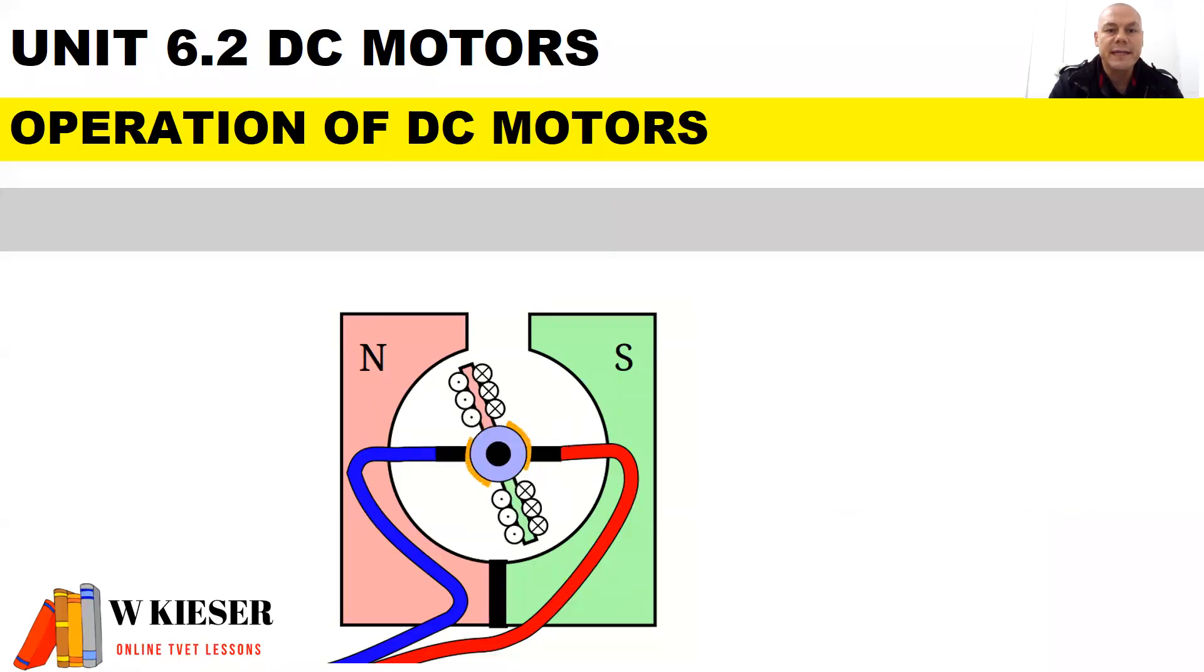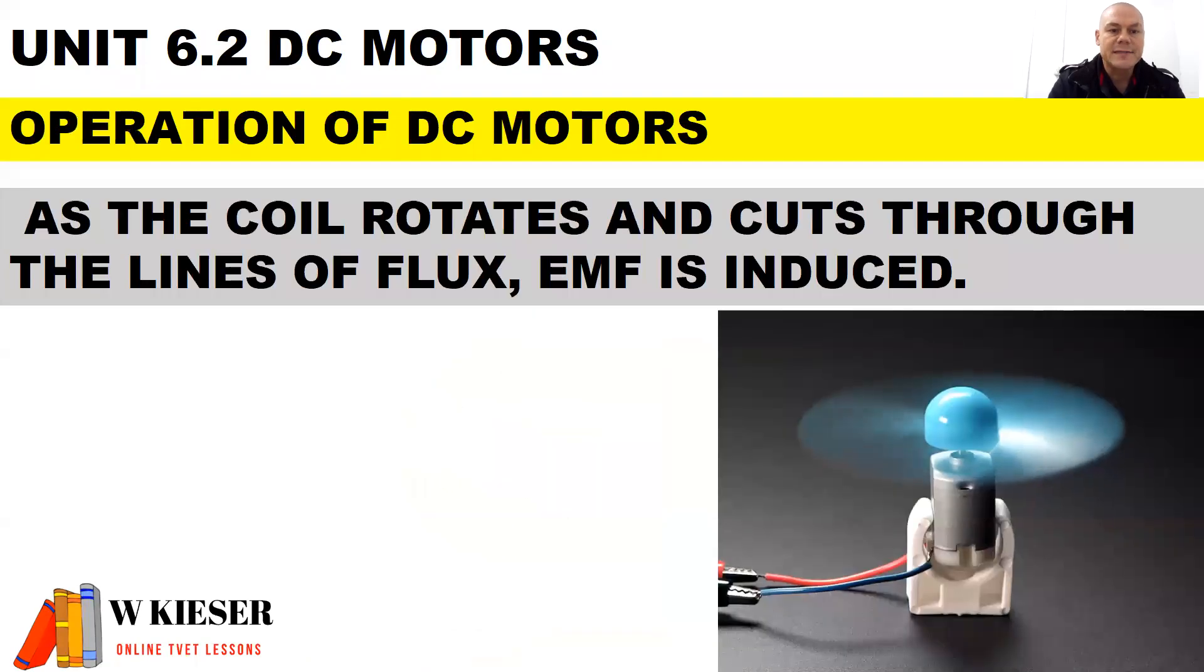In terms of the operation of DC motors, don't forget the construction for a DC motor and a DC generator is exactly the same. The only thing that changes is the operation. As the coil rotates and cuts through the lines of flux, an EMF is induced.